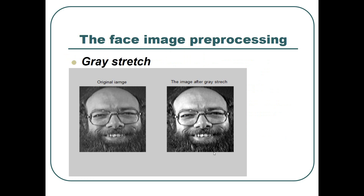The second method is gray stretch. This method transforms the gray value of each pixel into another gray value according to a certain mapping method. So we are able to give a new gray value to each pixel to enhance the contrast ratio of the image. From this image, we know that the contrast ratio of the processed image is improved and the details are clearer.